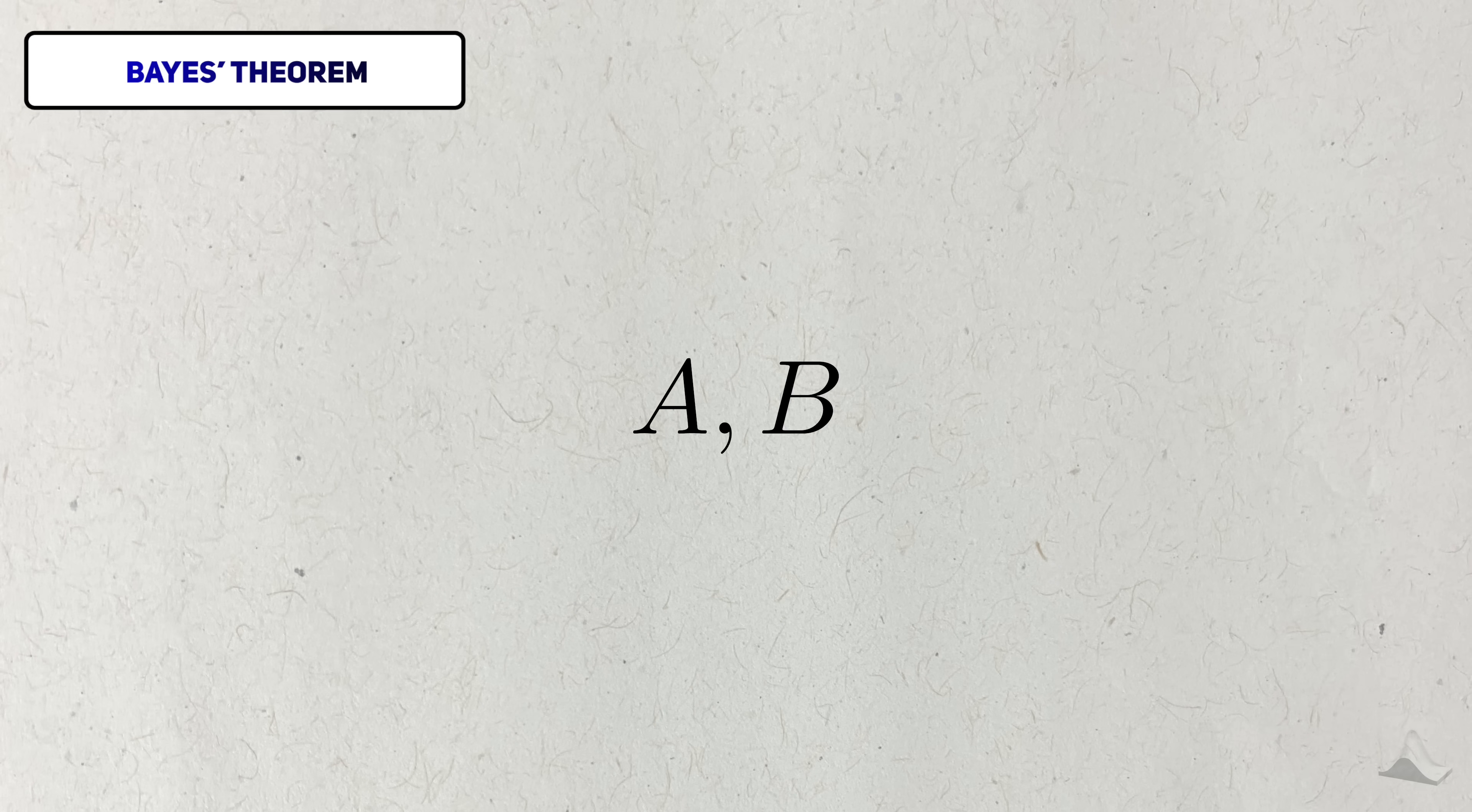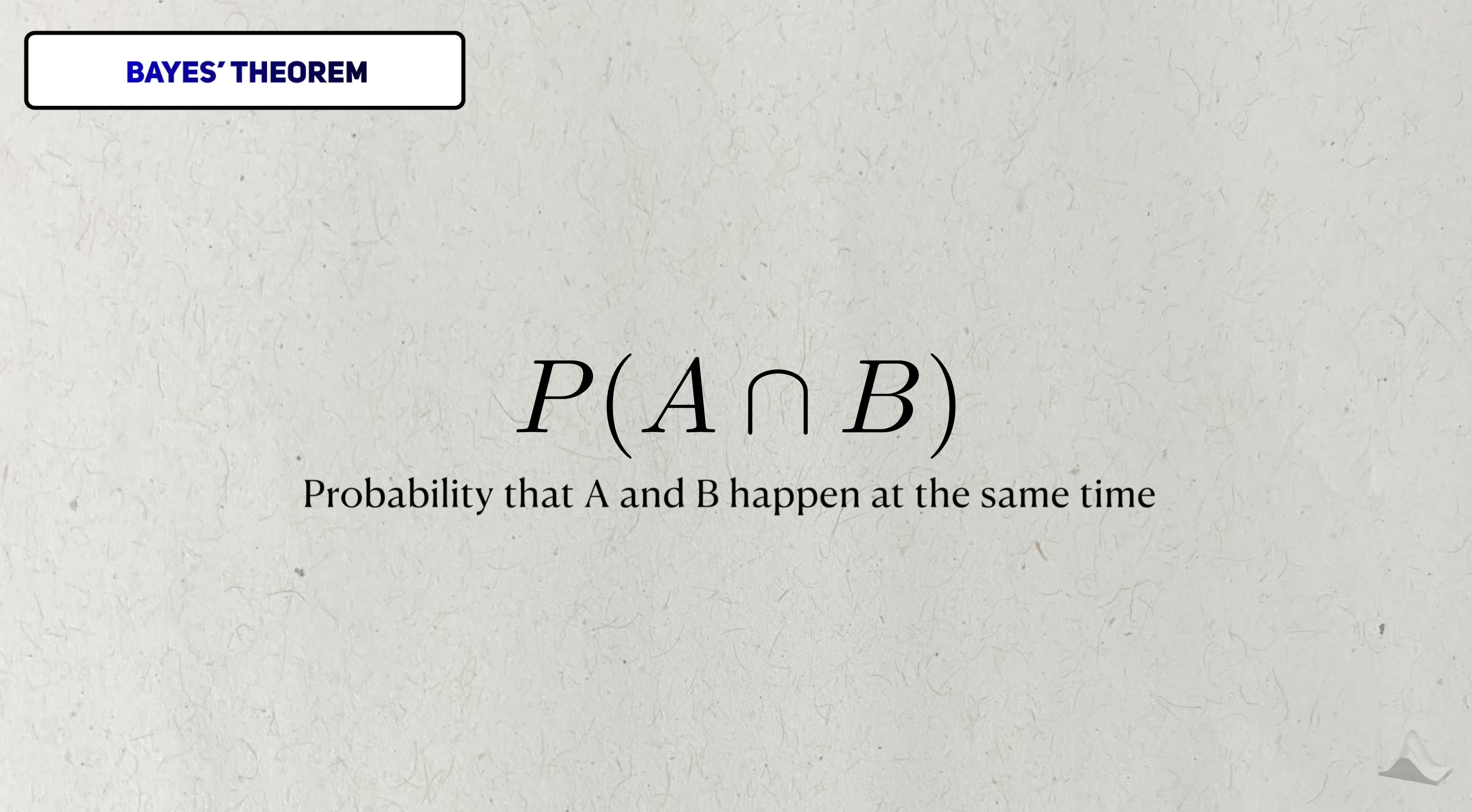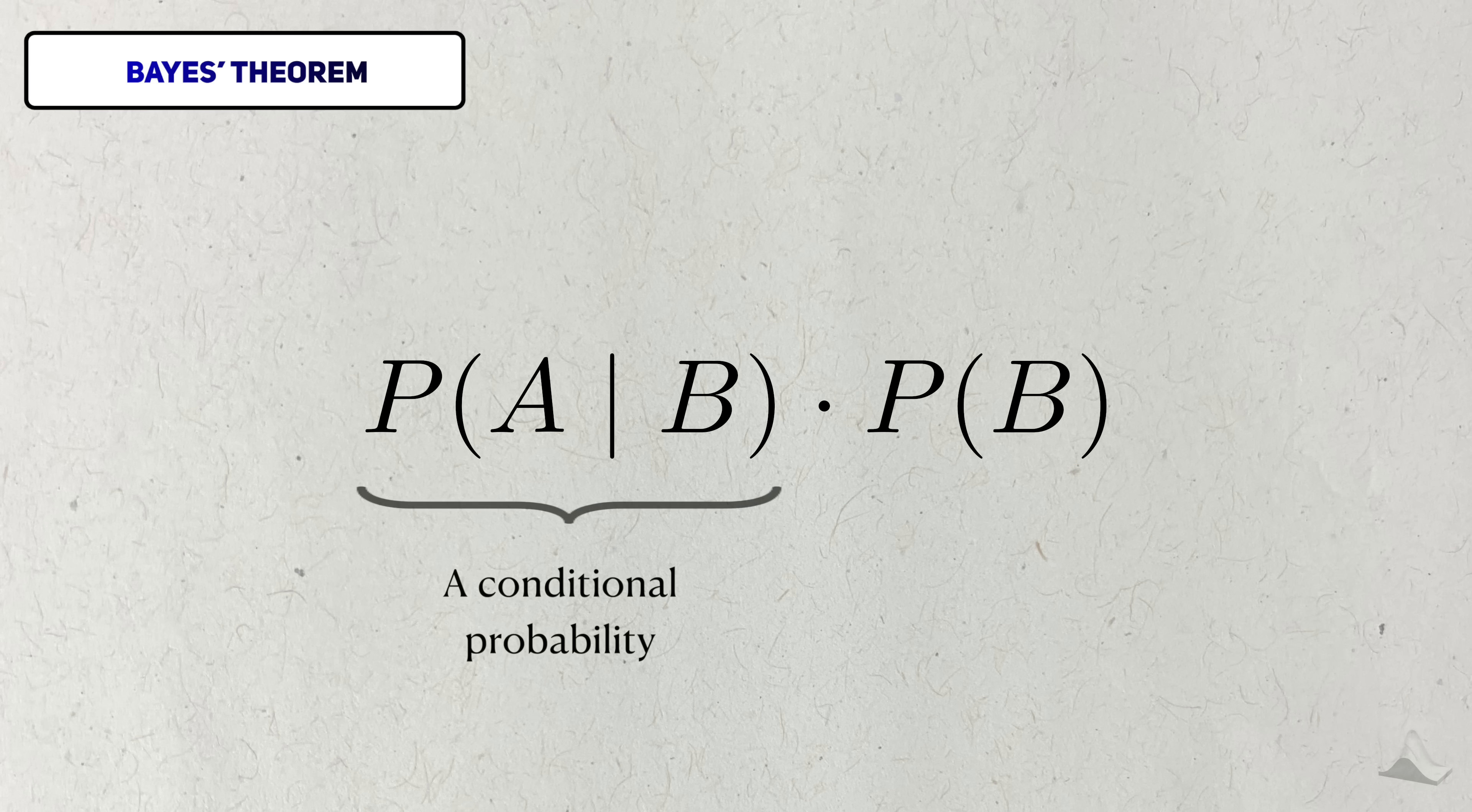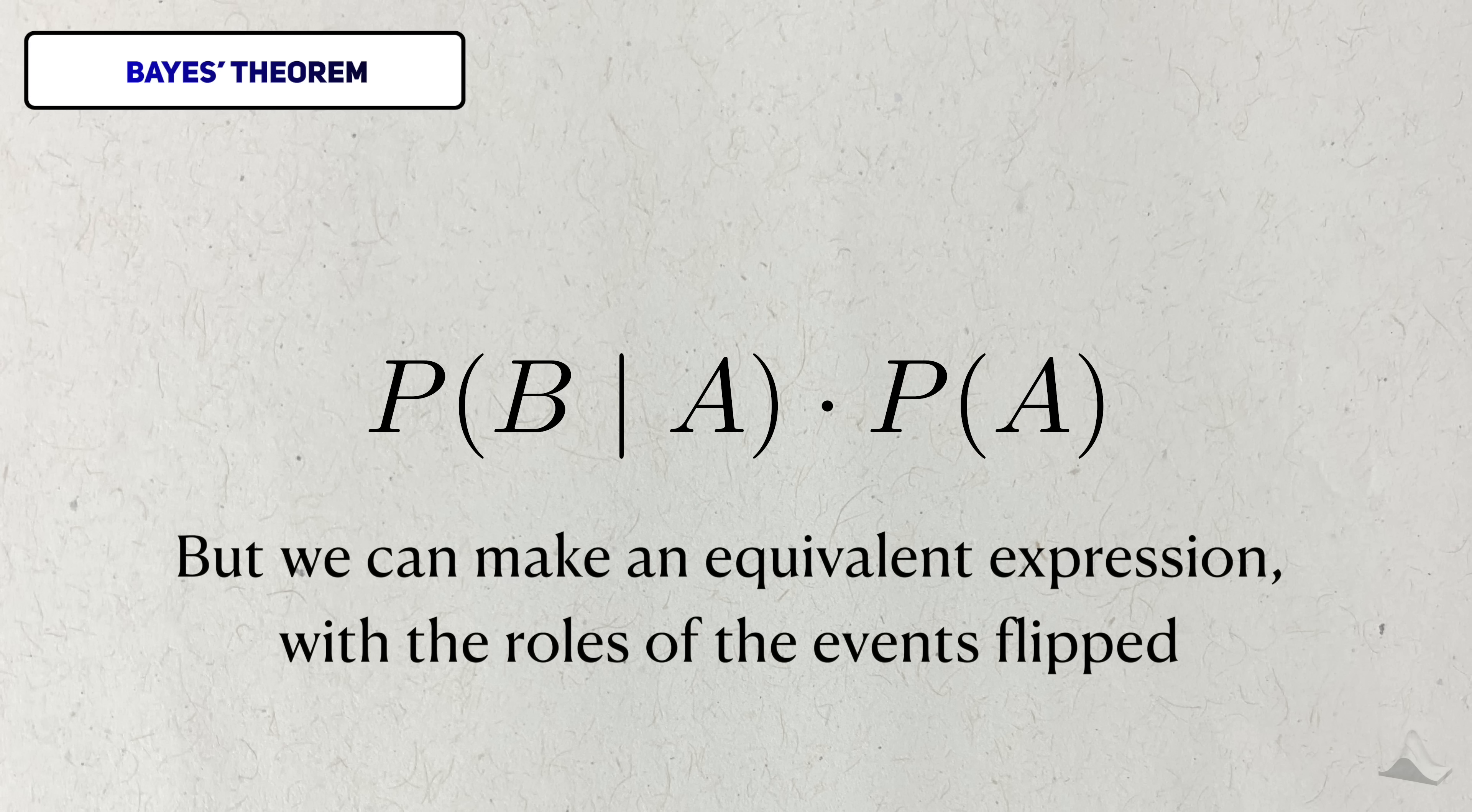Given two events, A and B, the probability that both of these events will happen can be written in terms of an intersection. This intersectional probability can also be written in terms of a product, a product of a so-called conditional probability and a marginal probability. In this case, I've written as the conditional probability of A, given that B happened, multiplied by the probability that B happened.